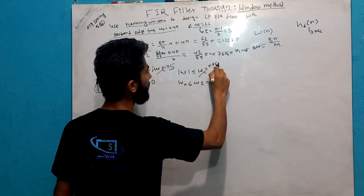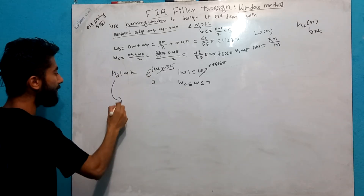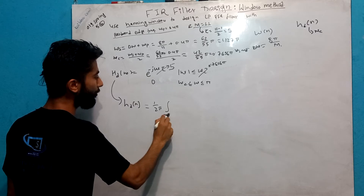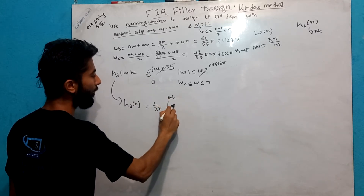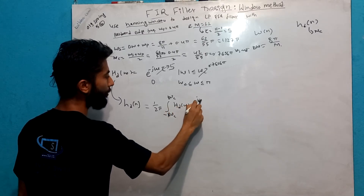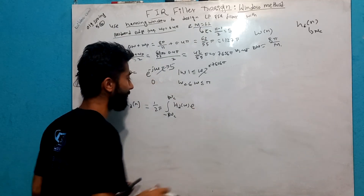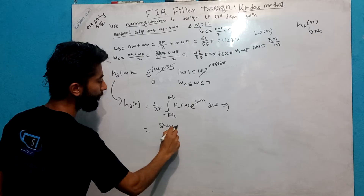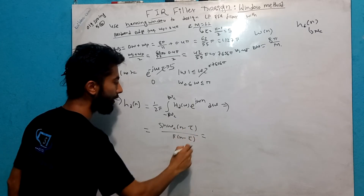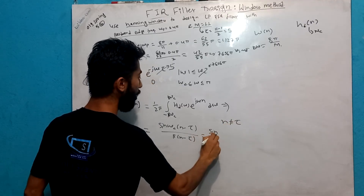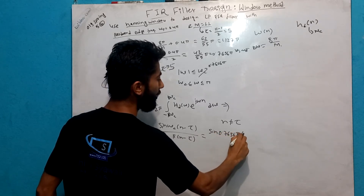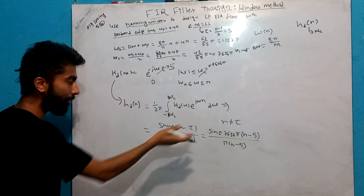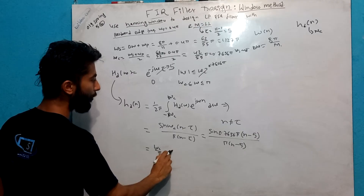We can write omega c as 0.7636π. This gives us h(n) equals sin(omega c · (n − tau)) divided by π(n − tau), for n not equal to tau. With omega c = 0.7636π and tau = 5.